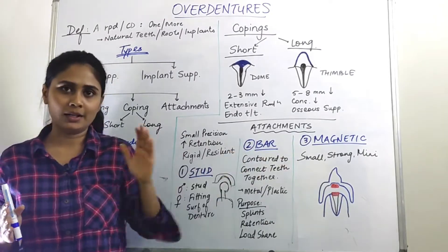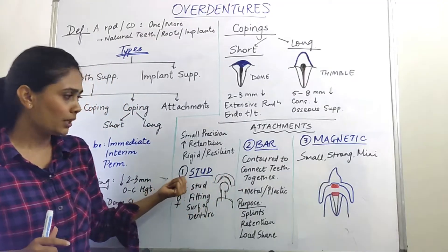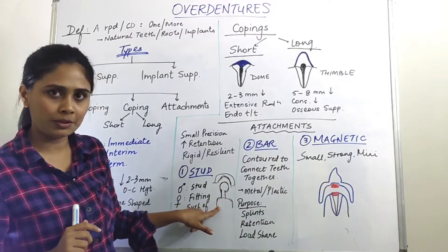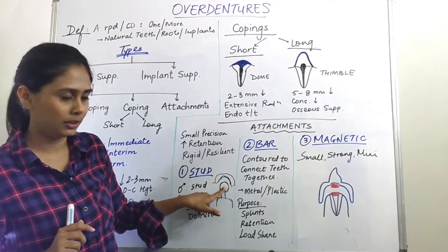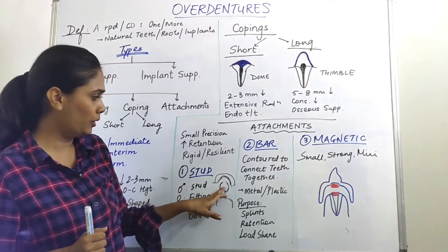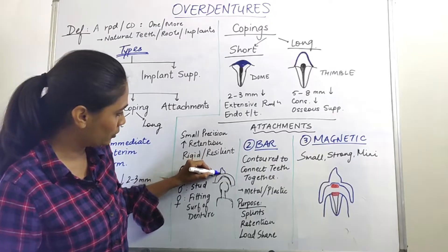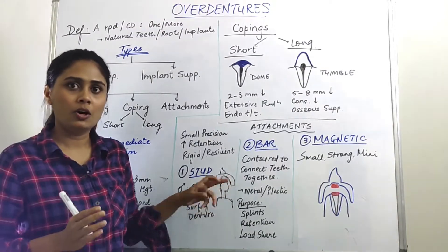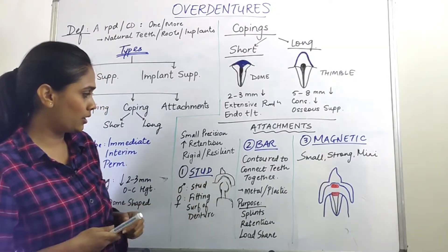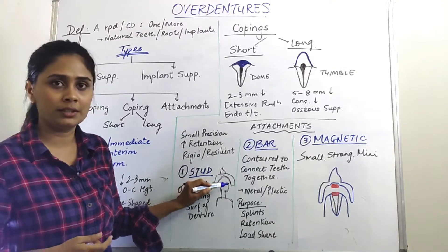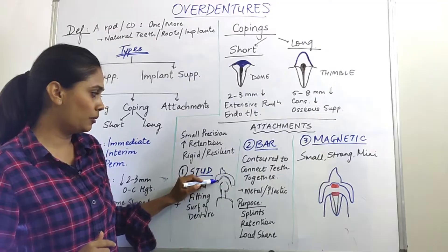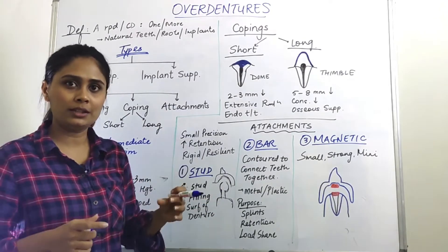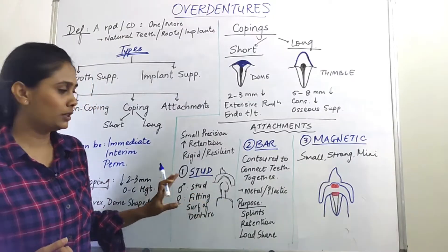Moving on to stud, bar, and magnetic types of attachments. In stud type, we have a female part and a male part. The ridge has a stud — a round or ball-topped protrusion — which is the male component. The female part sits on the fitting surface or impression surface of the denture. The impression surface is the surface that comes in contact with the ridge, and it acts as the female component while the stud over the ridge provides retention.